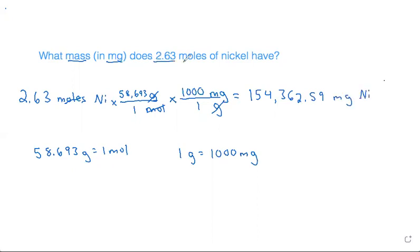From here we have three significant figures in our problem. So we need to round to three significant digits. That would be rounding to the four. The digit to the right of the four is a three. So we leave it the same and we get 154,000 milligrams of nickel.